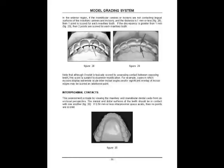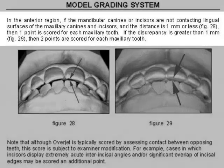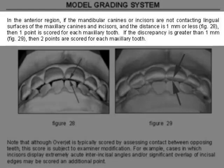In the anterior region, if the mandibular canines or incisors are not contacting the lingual surfaces of the maxillary canines and incisors, and the distance is one millimeter or less, then one point is scored for each maxillary tooth. If the discrepancy is greater than one millimeter, then two points are scored for each maxillary tooth.